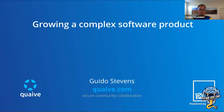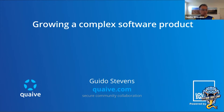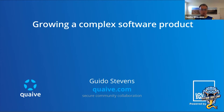My name is Chris Stephens. I'm the founder of Quaive, which is a secure collaboration suite, and we'll get to see some of Quaive later in this talk. But first, I'd like to introduce you to the core problem I would like to discuss, which is that the software industry has a dirty secret, and it's a bit embarrassing.